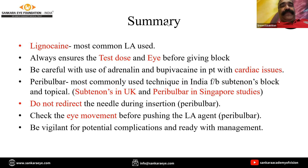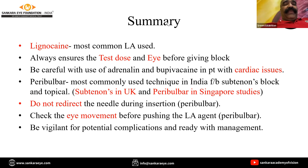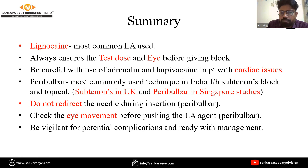When asked to choose between sub-Tenon's and peribulbar blocks, the presenter prefers the sub-Tenon's block because the chances of complications such as globe perforation and retrobulbar hemorrhage are lesser. The faculty affirms this and adds that with sub-Tenon's, only 2 ml is used, it uses a blunt cannula rather than a sharp needle, and the chance of the agent entering a blood vessel is essentially absent.